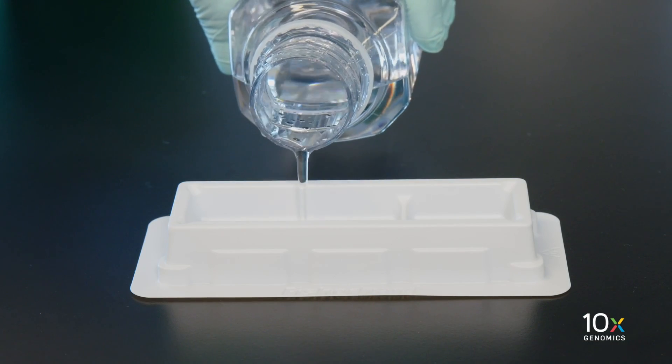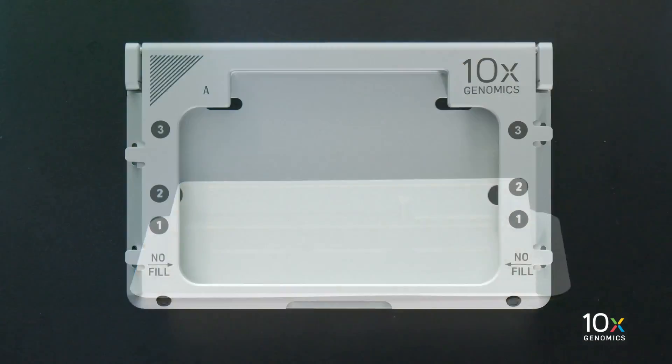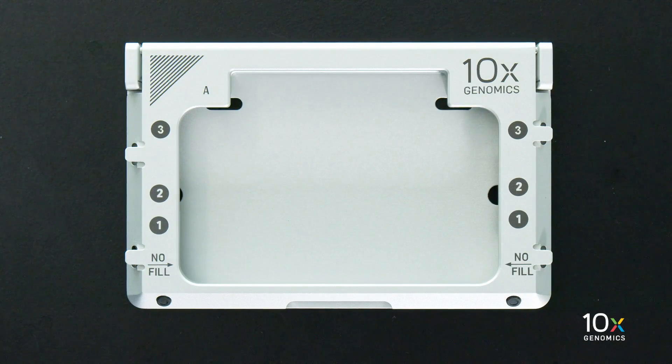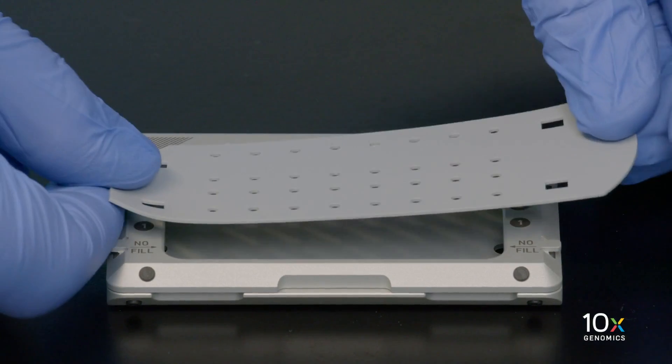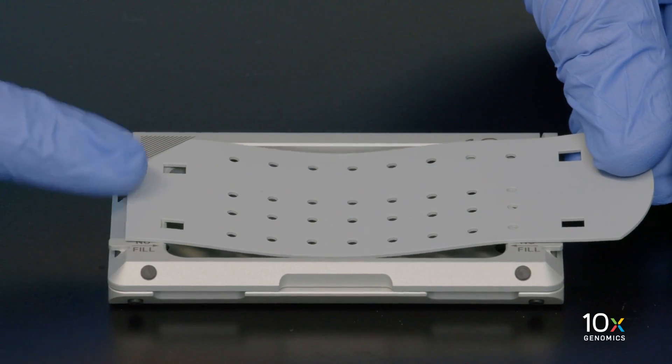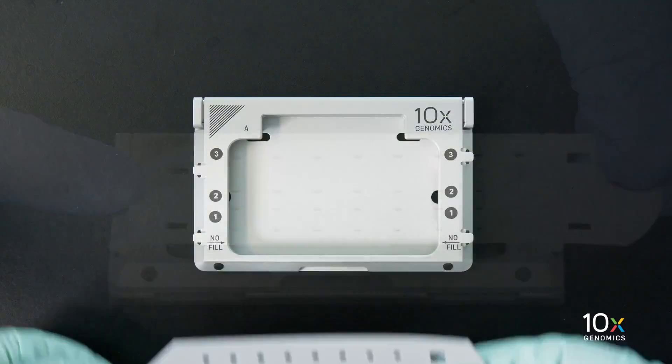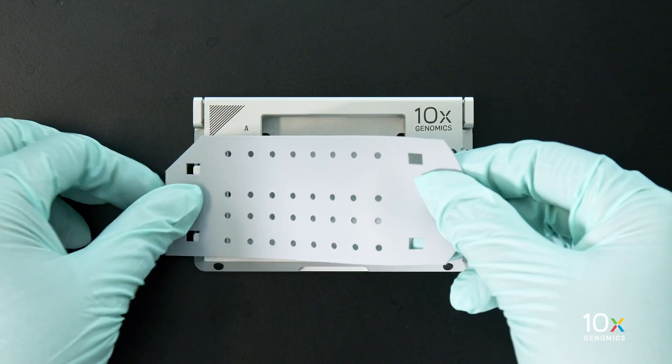We have combined the GEM master mix with the resuspension buffer and diluted samples. Now we will assemble the chip. We have 50% glycerol. Ensure the secondary holder is closed before attaching the gasket. The gasket attaches in only one orientation with the notch on the upper left hand corner.